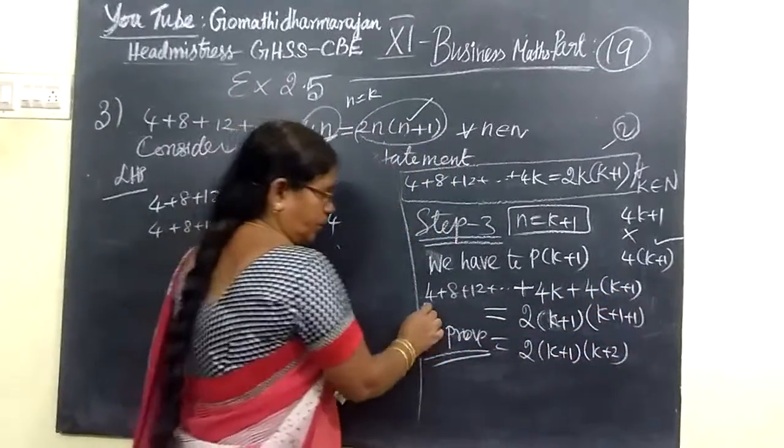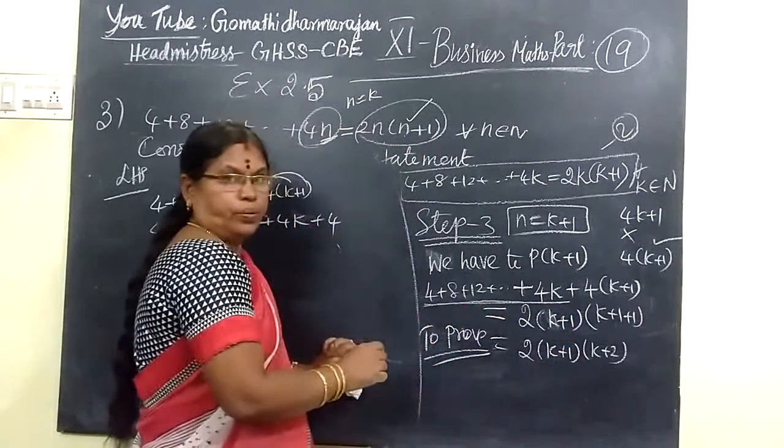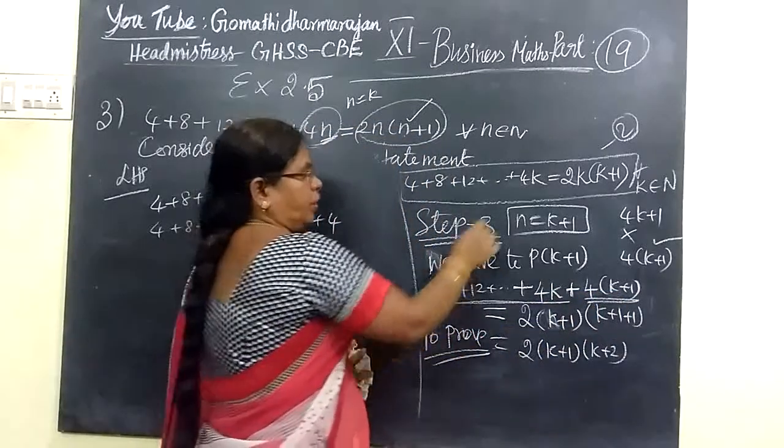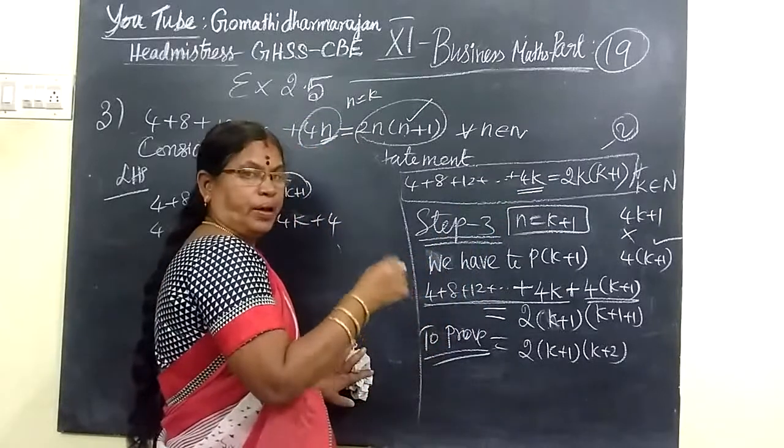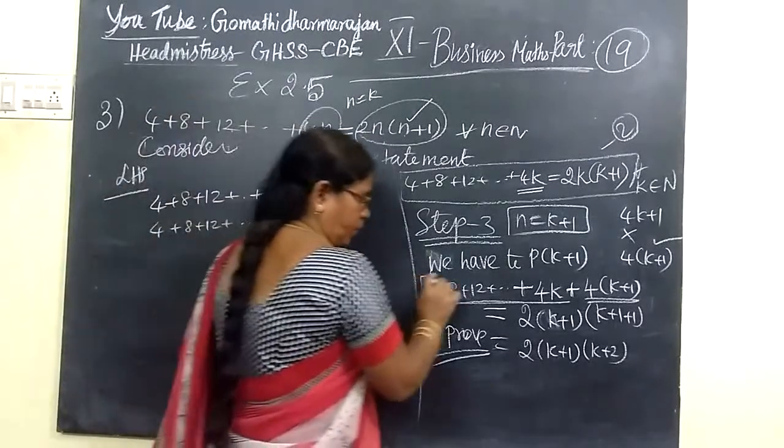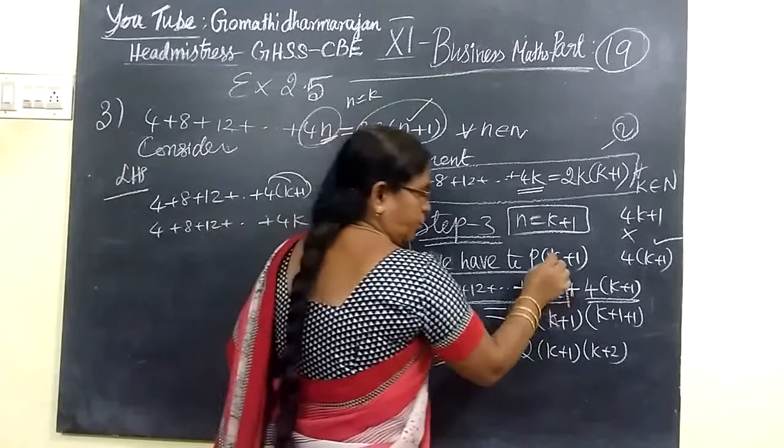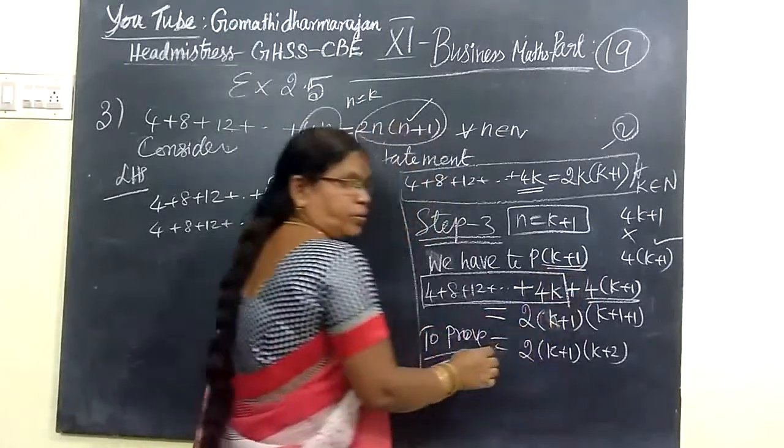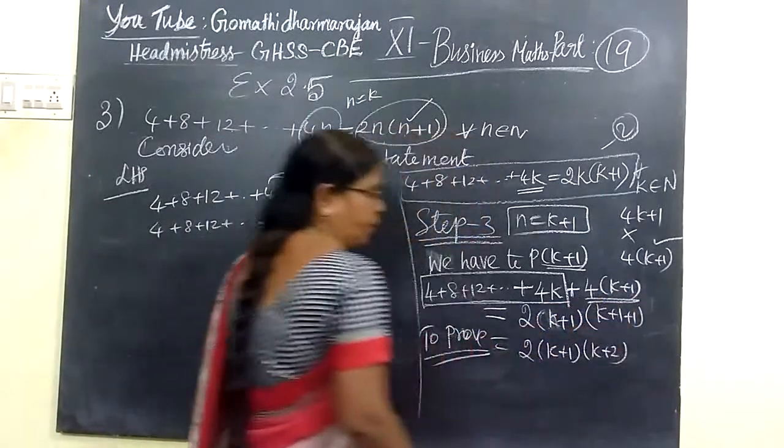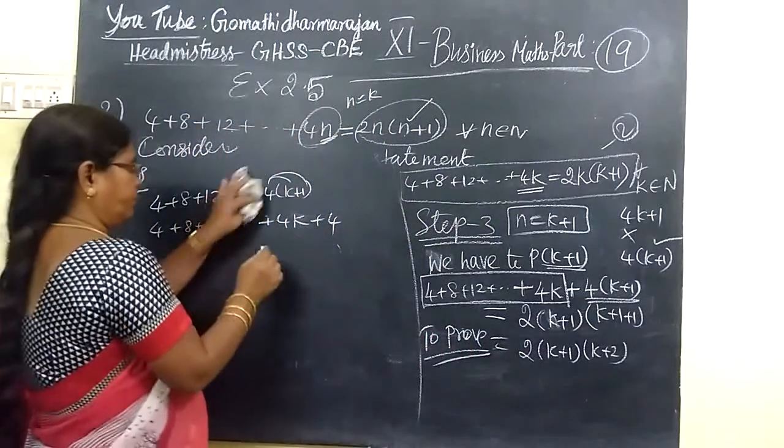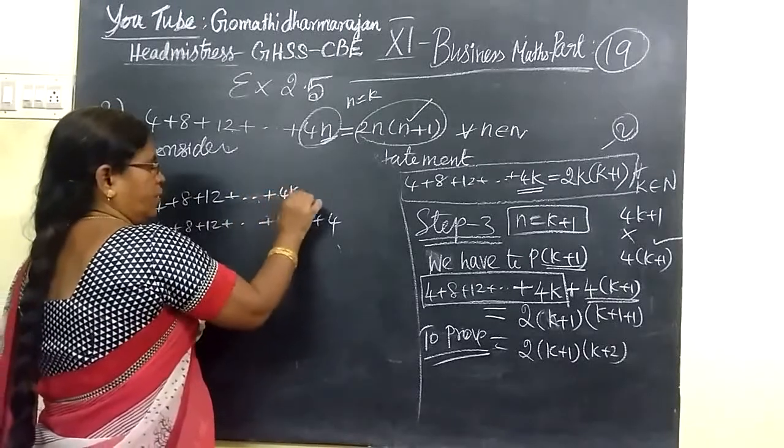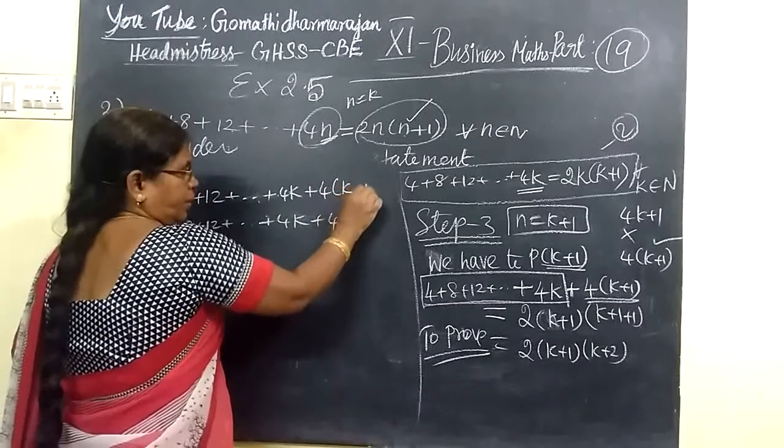Then we will be using 4K plus 4 bracket K plus 1. This is the last term. In the last term you have to write 4 times K. So 4 times K plus 1, I think you have this term. This one is this one. This one you write as it is, this is the last term K plus 1.